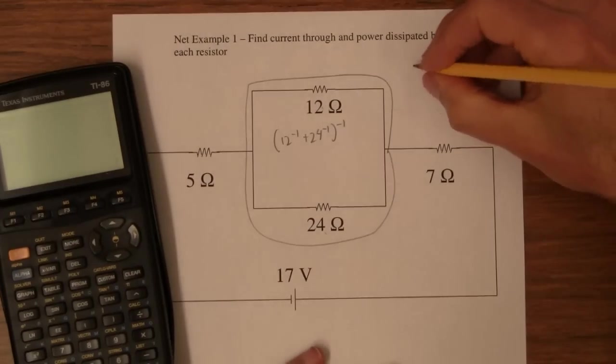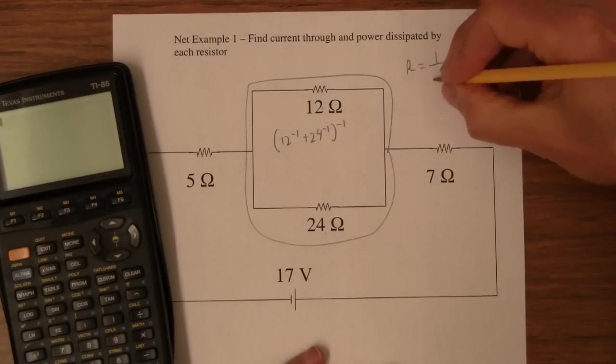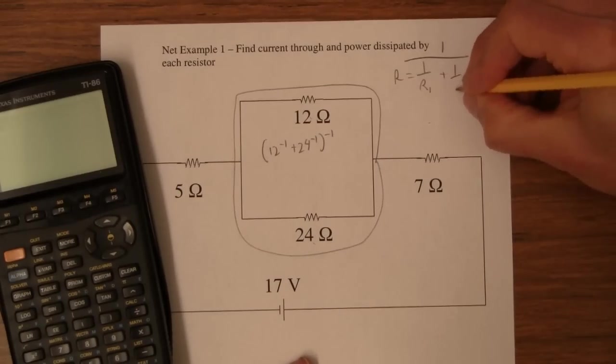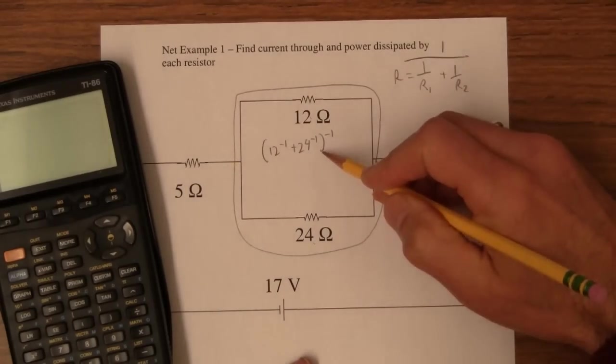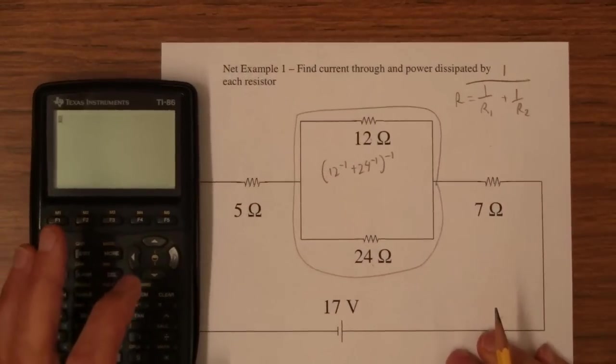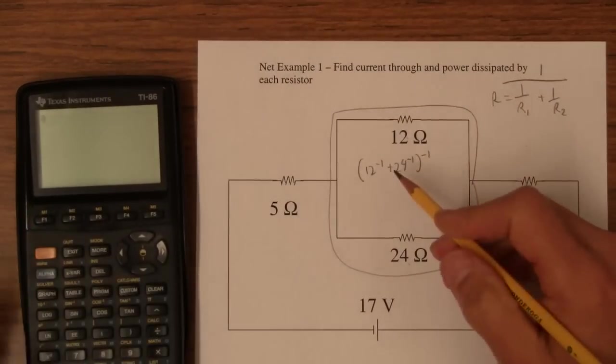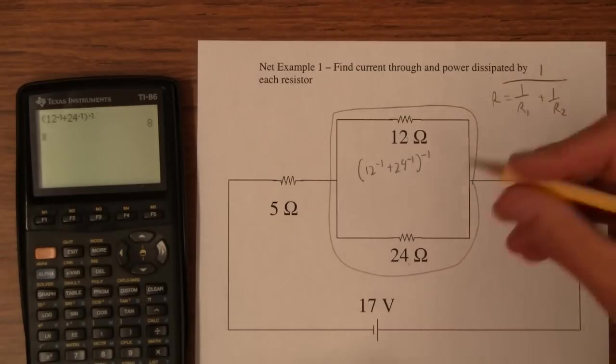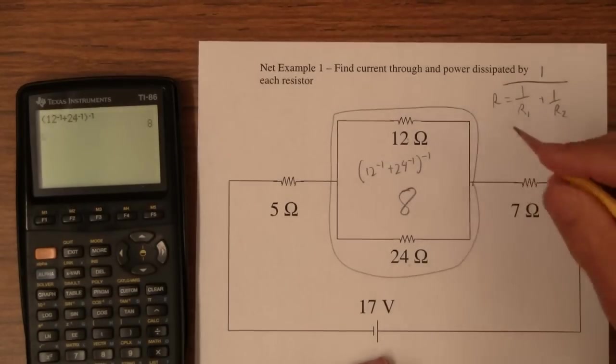The formula is R is 1 over R1, 1 divided by 1 over R1 plus 1 over R2. But this is the way I type it into the calculator because it's faster. So let's figure that out. Parenthesis, 12 to the minus 1 plus 24 to the minus 1. The whole thing to the minus 1, is 8. Comes out even.